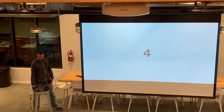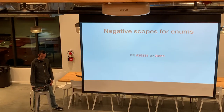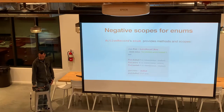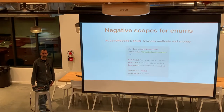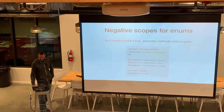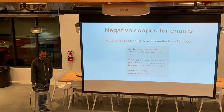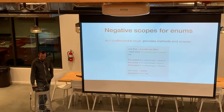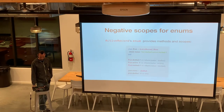Number four: negative scopes for enums, added in PR 35381 by DHH. Active Record's enum already provides some functionality. An enum value is basically stored in the database as an integer. Here we have a Post class with a status enum. The value is a symbol: either drafted, active, or trashed. Each symbol maps to an integer in the order they're defined — drafted is zero, active is one, trashed is two. Enum has historically provided scopes, so you could do Post.drafted, which does where status is drafted, Post.active, and Post.trashed.